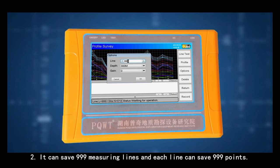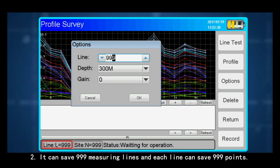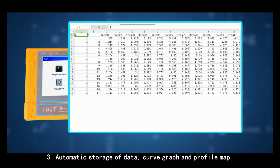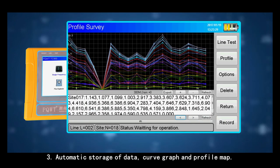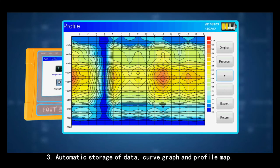Second, it can save 999 measuring lines and each line can save 999 points. Third, automatic storage of data, curve graph and profile map.